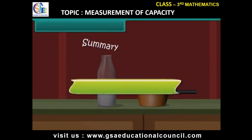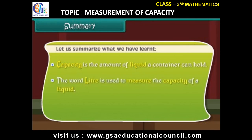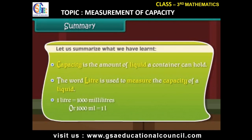Summary: Capacity is the amount of liquid a container can hold. The word liter is used to measure the capacity of a liquid. One liter is equal to one thousand milliliters, or one thousand milliliters is equal to one liter.